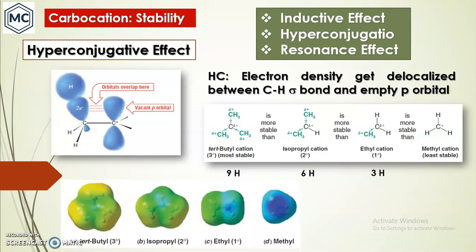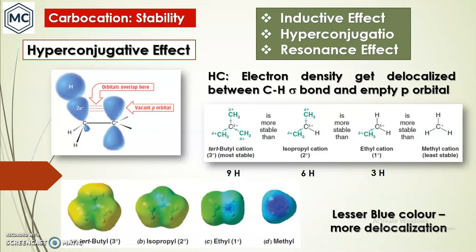This is an electron density diagram — a computer-simulated diagram showing the charge distribution in tertiary, secondary, primary, and methyl carbocations. The blue color represents charge concentration (electron deficiency). Lesser blue color means more delocalization. You can see the least blue color in the tertiary carbocation, and the blue color concentration increases as you go from tertiary to methyl, indicating increasing electron deficiency.